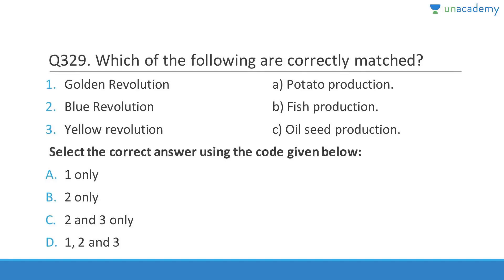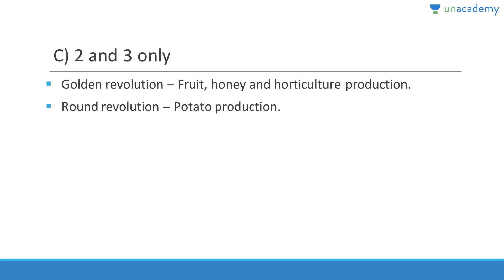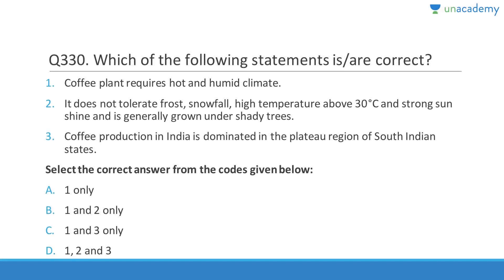Question 329: Golden revolution is associated with fruits and horticulture (not potato). Blue revolution is associated with fish production (pisciculture) — correct. Potato production is called the round revolution. Yellow revolution relates to oilseed production — correct. Answer is C (2 and 3 only) since the first statement incorrectly links golden revolution to potato.